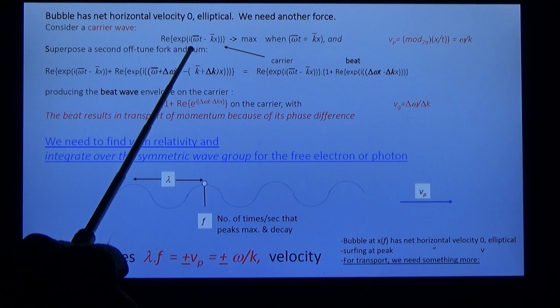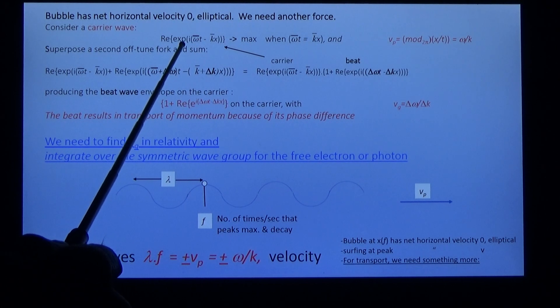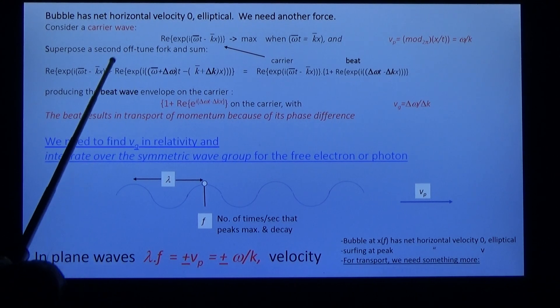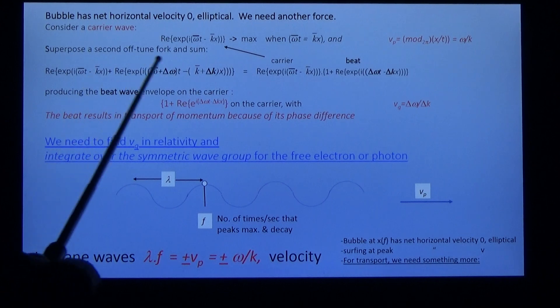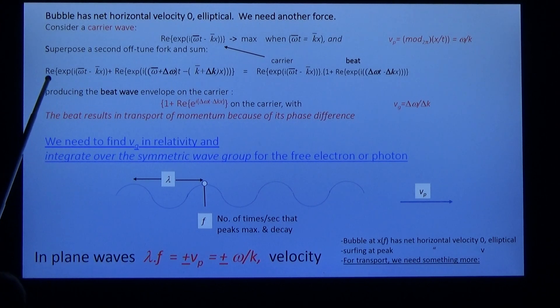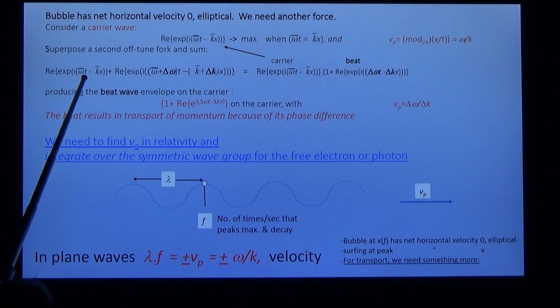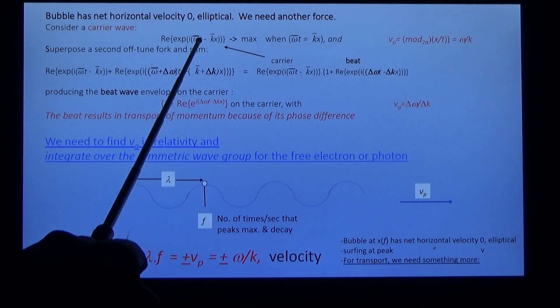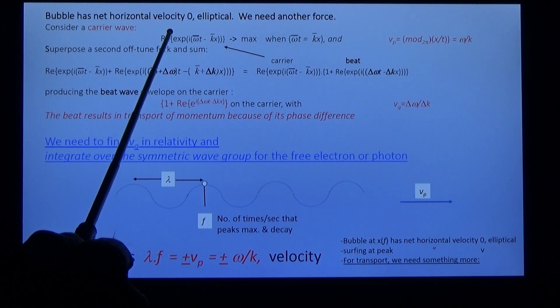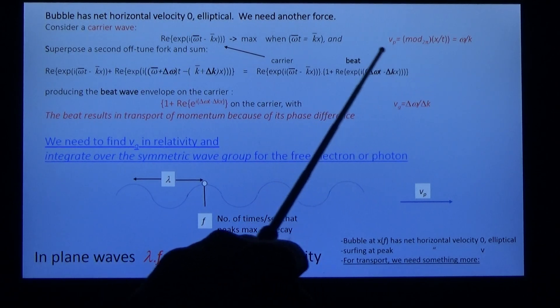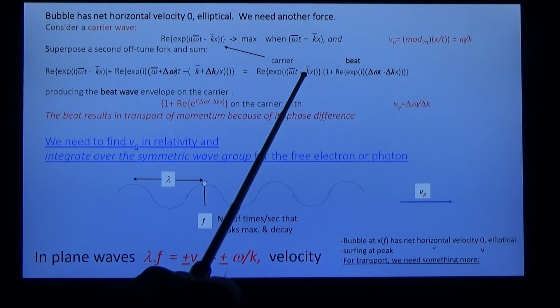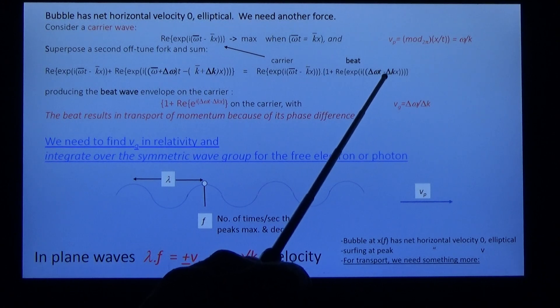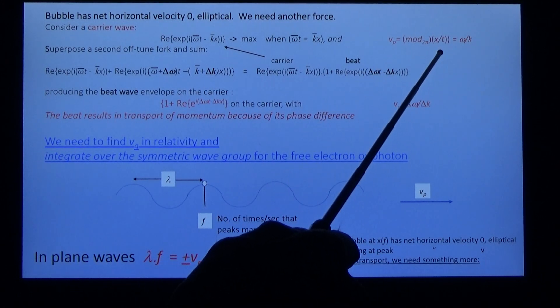Now, what happens if you have a tuning fork with one fork weighted? Piano tuners often have this experience that the way the sound is heard, it beats. And we can superpose the two waves, take out the carrier wave which is the same as the one we started with, and it's enveloped by a beat with velocity d omega by dk.